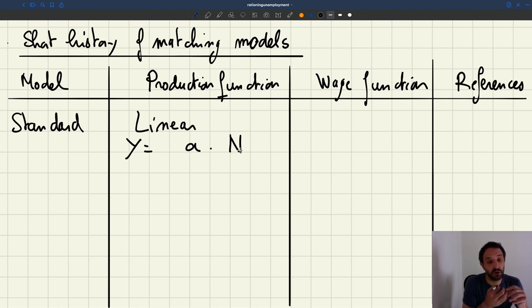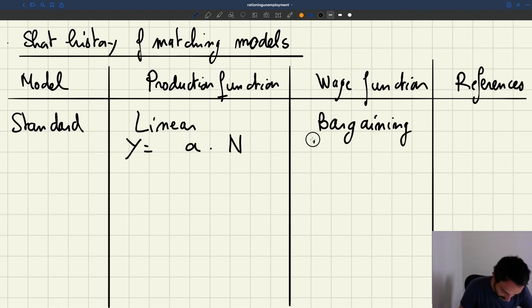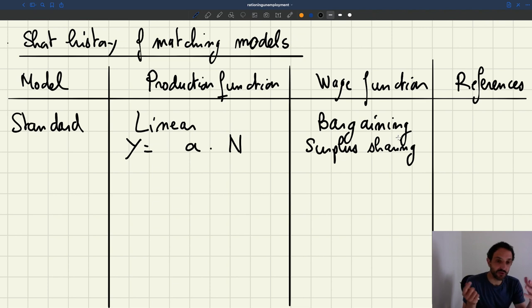In terms of wage function, what was typically assumed was that there was bargaining between workers and firm. There was a specific type of assumption that was used. That was Nash bargaining. That's often what you see in the literature, but in most of the cases using Nash bargaining or using just directly surplus sharing is completely equivalent.